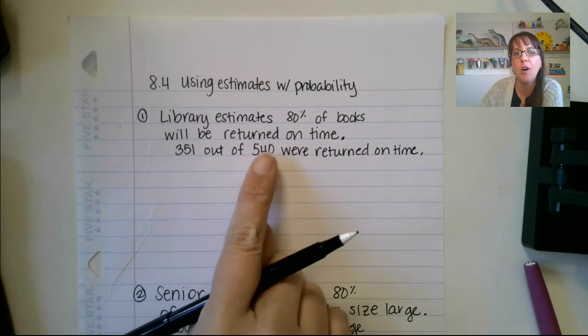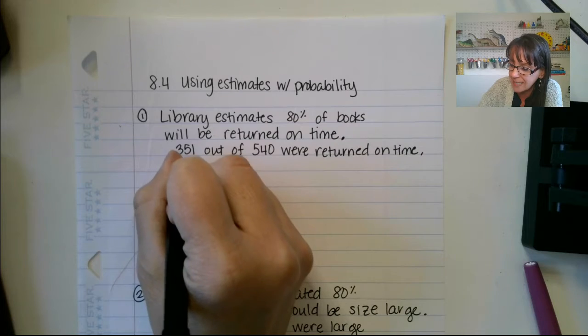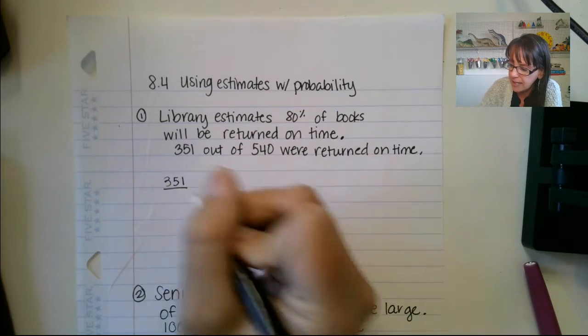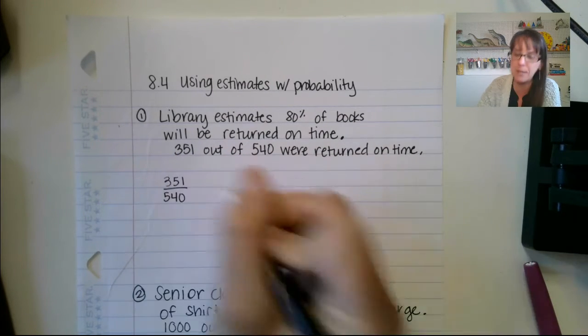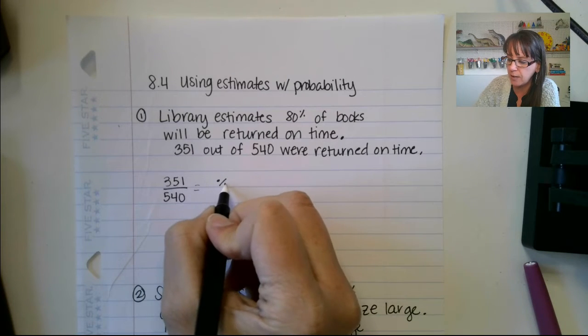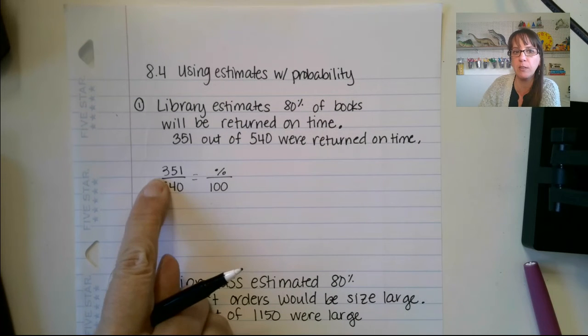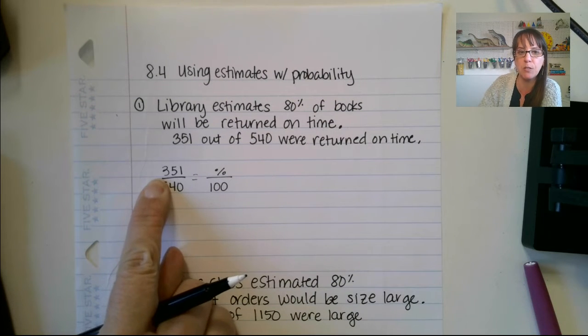First, we have to find what is 351 out of 540 as a percentage. Now, in order to find a percentage, you want to do part over whole equals percent over 100. Part over whole. So the whole amount of books was 540. The part that were returned on time was 351.